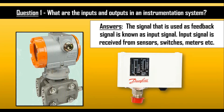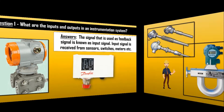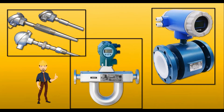Here a sensor and a switch are shown in the picture. Various sensors and meters are shown in pictures — here RTD and thermocouple are shown, magnetic flow meter is shown, and mass flow meter is shown. These are the input signals in an instrumentation system.